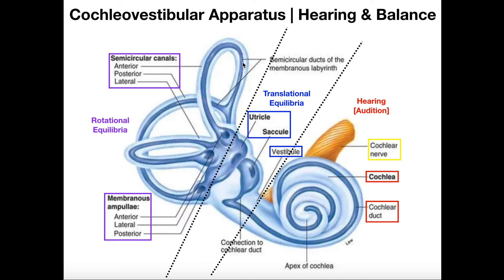When you're given a model on a quiz or exam, make sure you look at what it's pointing at. If it's opened up and pointing to the inside of the canal, your instructor is most likely asking about the semicircular duct. If they point to the bony part on the outside and it's not opened up, you're referring to the semicircular canal. The duct is inside the canal.